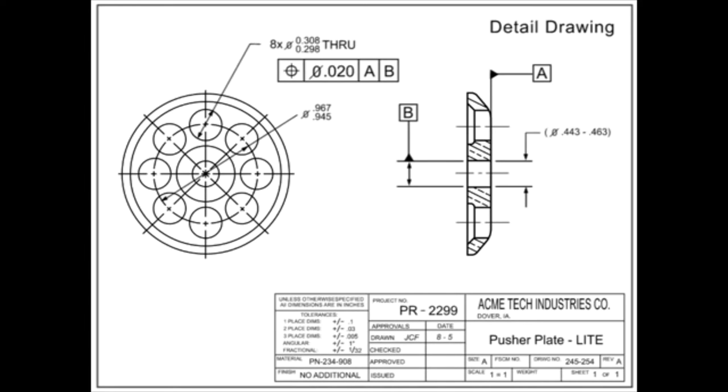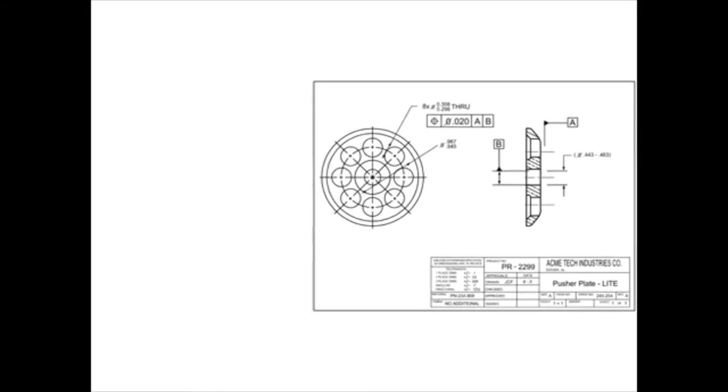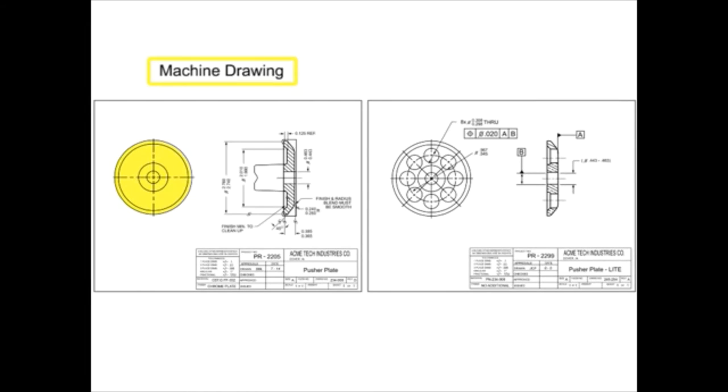Modification drawings delineate changes to existing items. As with a machine drawing made from a cast, modification drawings are created to add, remove,